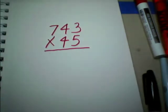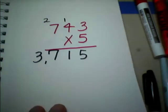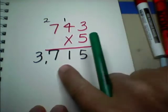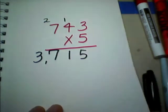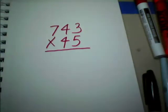Now remember, we did a warm-up problem where we took 743 and just multiplied it by 5, and we got an answer of 3,715. So keep that in mind. Okay, 743 times 45.